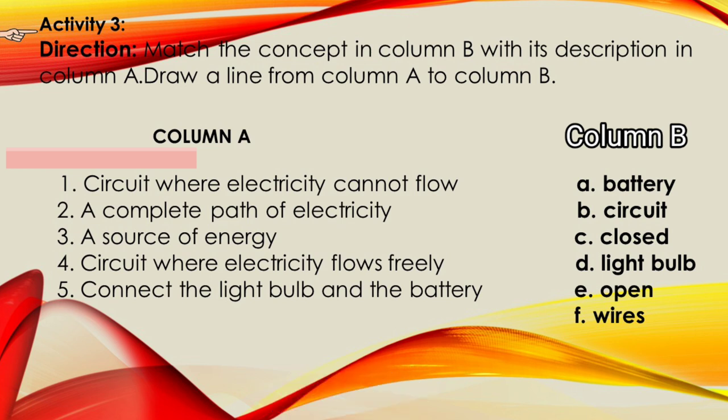Let us check your answers. 1. Circuit where electricity cannot flow. That is letter E, open. 2. A complete path of electricity. Letter B, circuit. 3. A source of energy. Letter A, battery. 4. Circuit where electricity flows freely. Letter C, closed. 5. Connect the light bulb and the battery. Letter F, wires. If you got it right, congratulations!